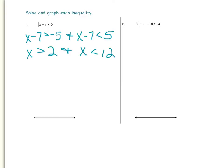Now let's graph our conjunction. We know that x has to be greater than 2 and x has to be less than 12. Because it's just greater than and less than, our dots will be open. And because it's a conjunction, we will put the line in between the two points, because x can be any number between 2 and 12.